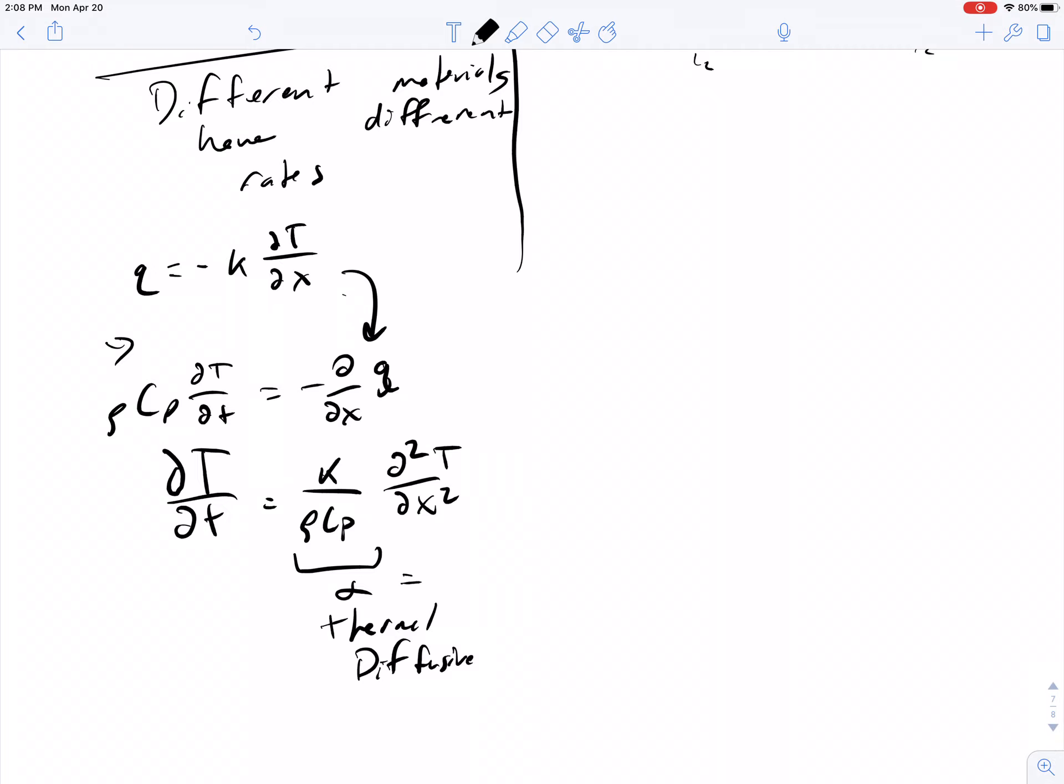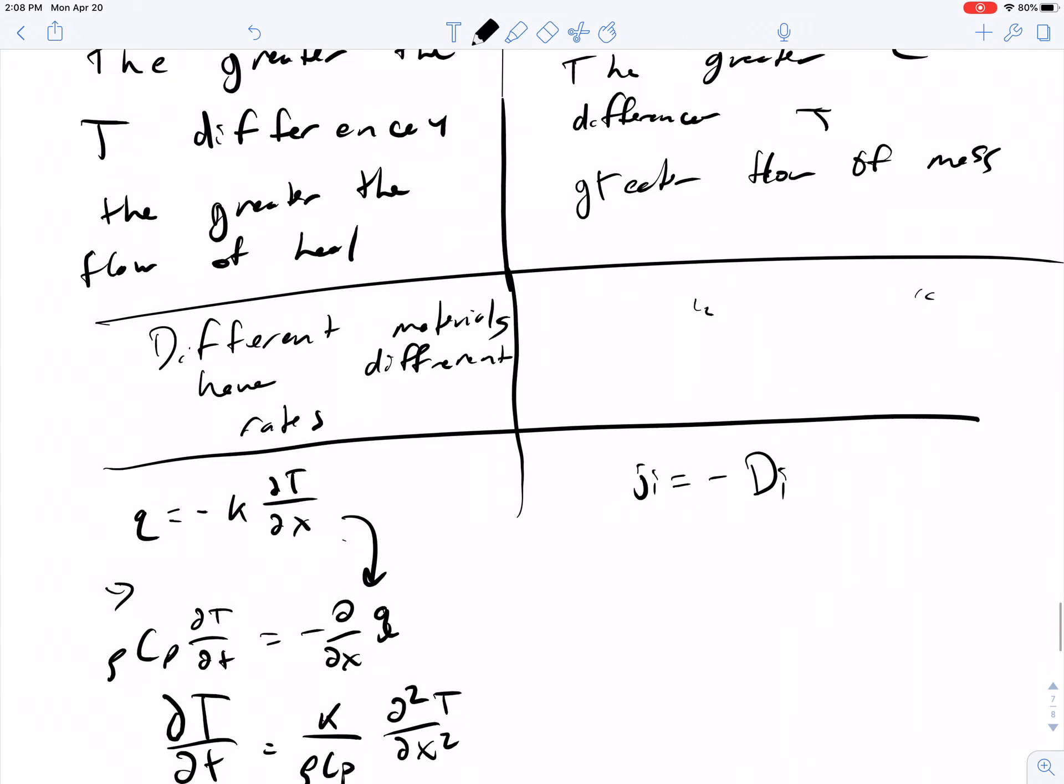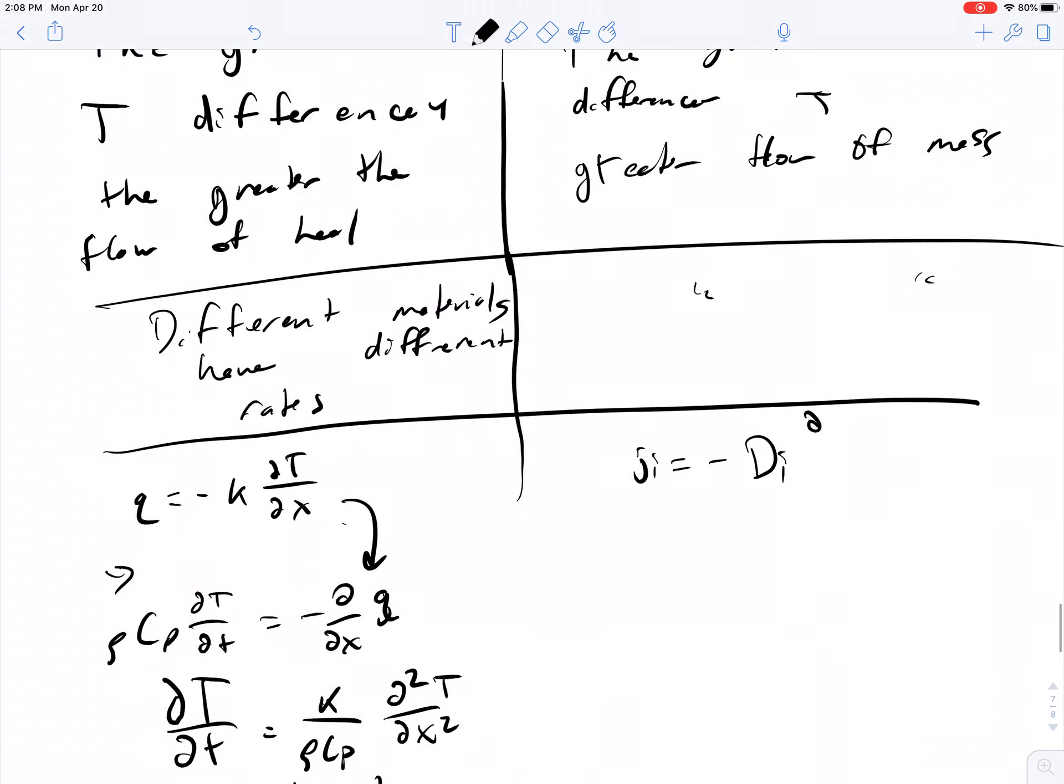By analogy, for this other system, ji equals minus di del ci del x. It has to be a downhill slope as well, because concentration goes from high to low. For a positive flux, you need the minus there.